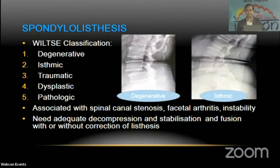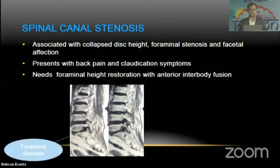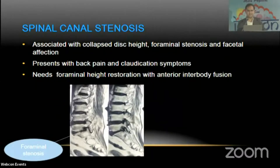These conditions need adequate decompression, stabilization, and fusion with or without correction of listhesis. Spinal canal stenosis may be associated with collapsed disc height, foraminal stenosis, and facetal flexion. The patient may present with back pain and claudication symptoms and they need foraminal height restoration with anterior interbody fusion.